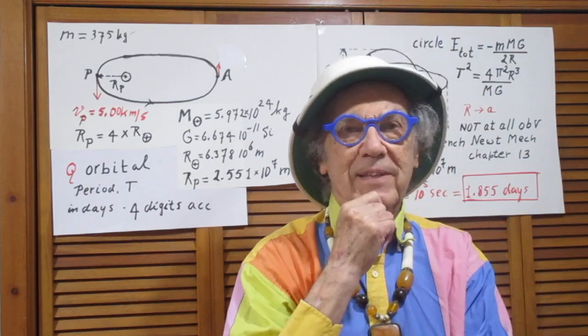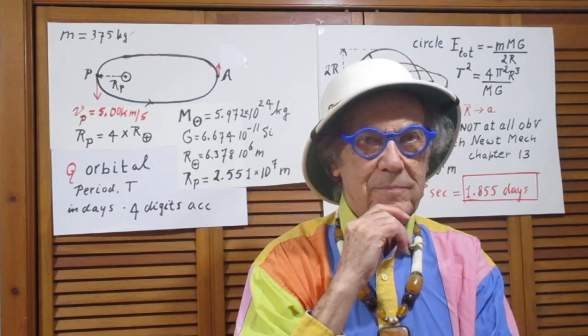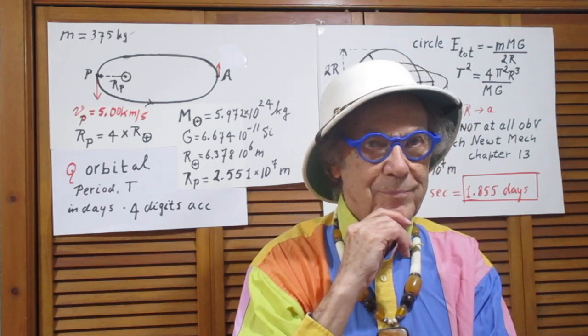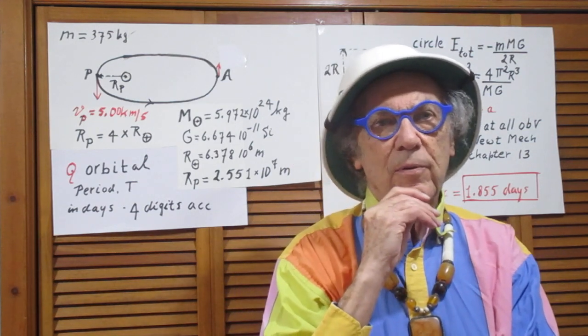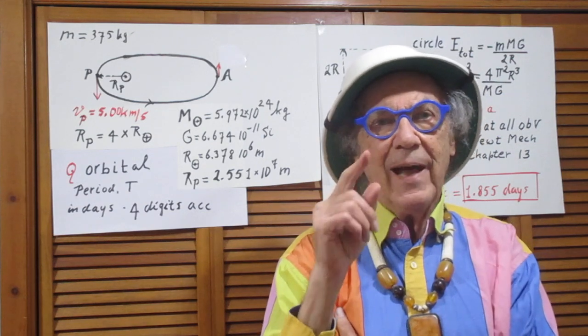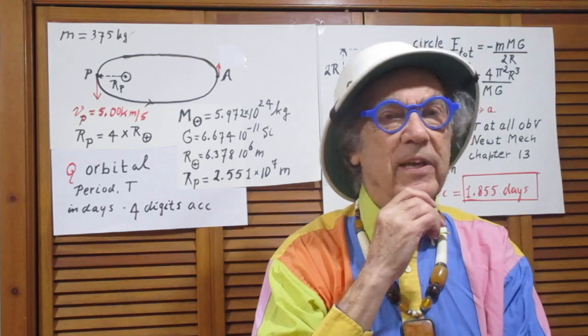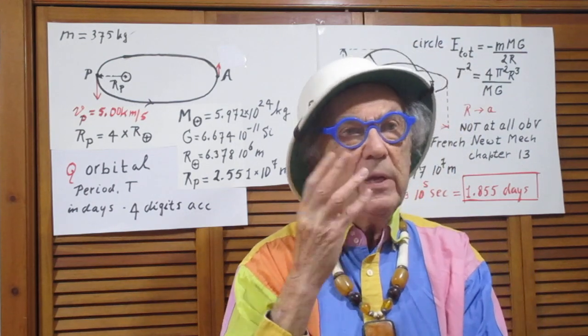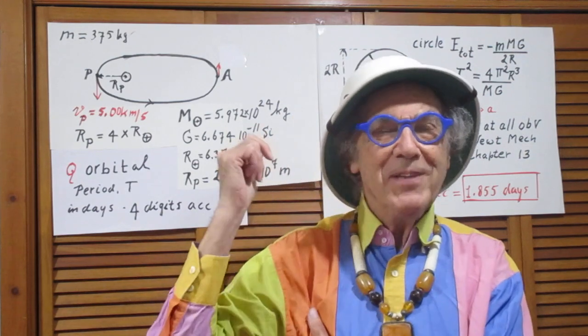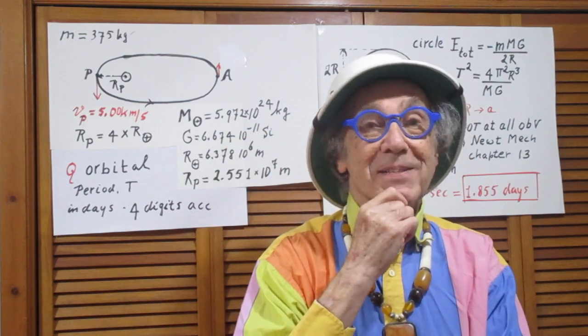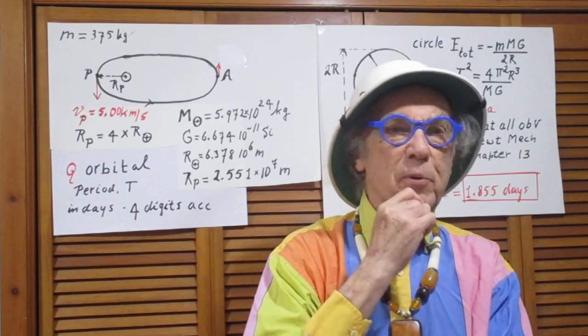One person finds that the orbital period is 7 seconds. Don't you know that the orbital period of any satellite near Earth, like the International Space Station, is about 90 minutes. So, this one will take only 7 seconds.